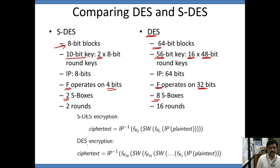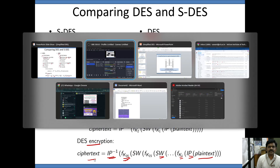In DES, the round function operates on 32 bits and there are a total of 8 substitution boxes. The corresponding DES encryption operation involves plaintext, initial permutation, round functions with switching of the halves, performed for 16 rounds of operations, and then finally inverse permutation producing the ciphertext. Thank you.